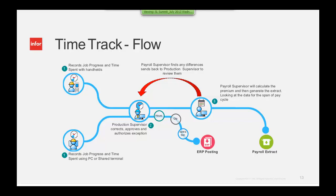From a flow standpoint, it's a very simplified flow. End users collect time on a mobile scanner or on a PC with keyboard and mouse, collecting both attendance and labor information. Both pieces of information go to the production supervisor, who reviews and approves the data. The labor information then goes to the ERP — Sightline — and the payroll-related information goes to the payroll supervisor. The payroll supervisor can review everything, kick it back to the production supervisor if corrections are needed, or take a payroll extract and send it to the payroll software for processing.